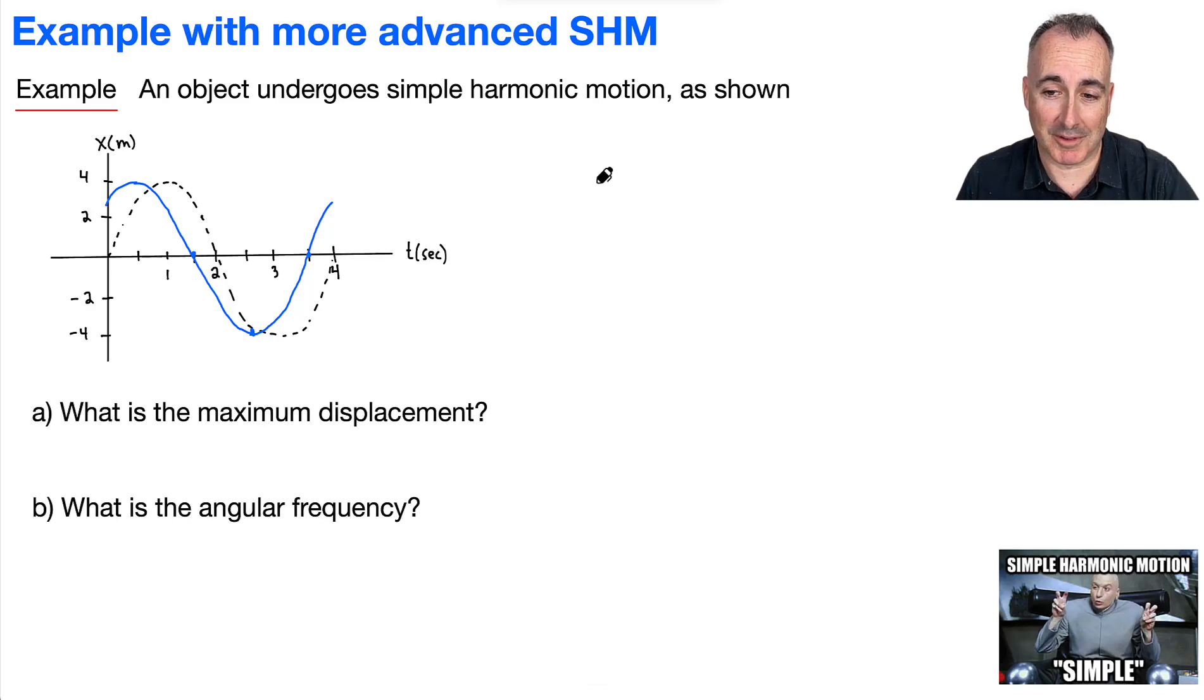I put this one from a really old movie called Austin Powers with simple harmonic motion. Let's do an example with more advanced simple harmonic motion. We have an object that undergoes SHM as shown. We've got a dotted line here for reference, and then we've got this real graph, which is actually this blue one, where everything is shifted to the left. Notice this point right here went to the left, this one over here went to the left, and so on.